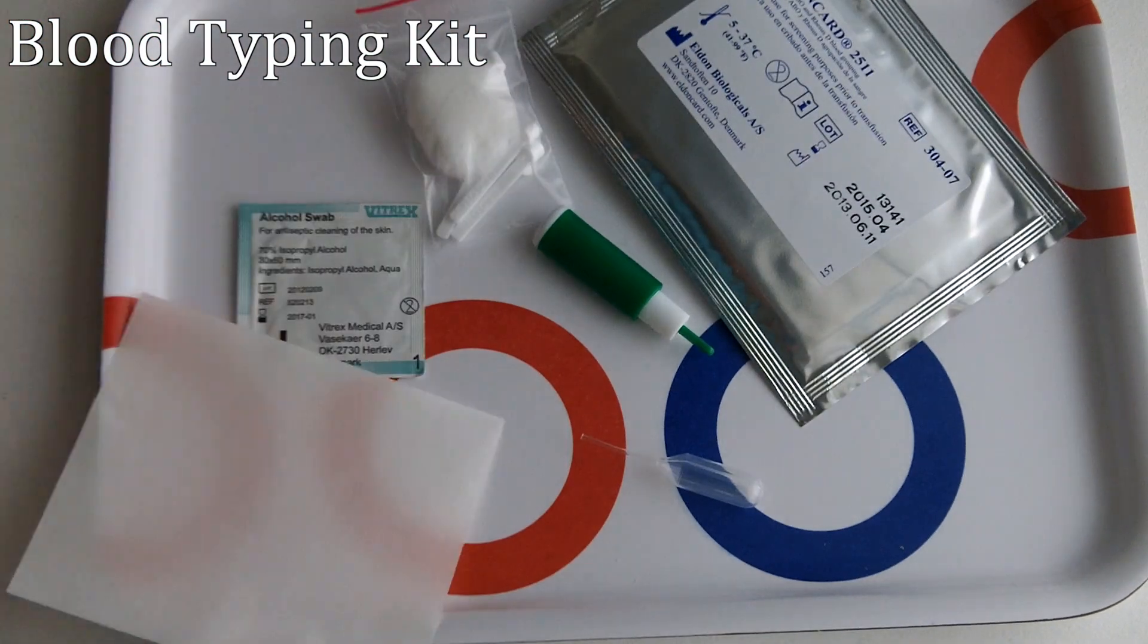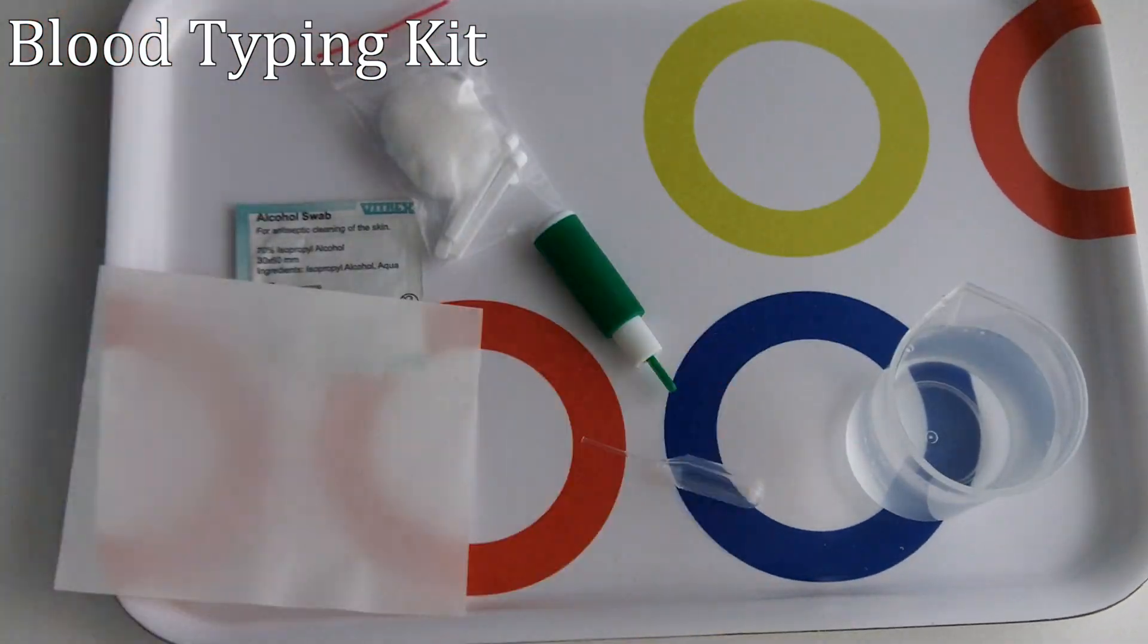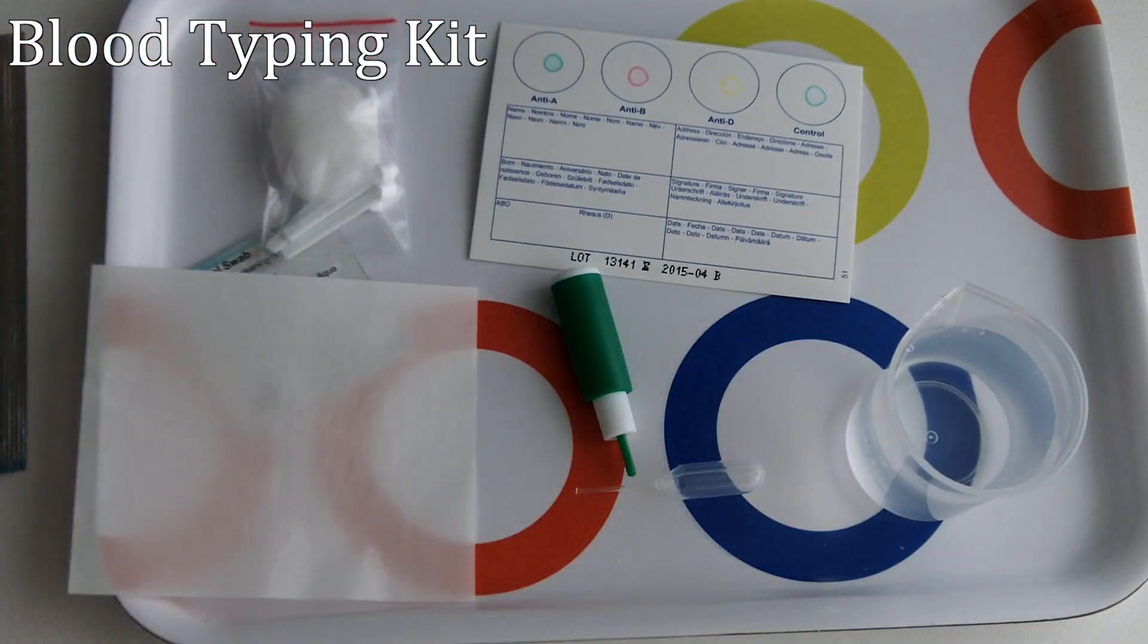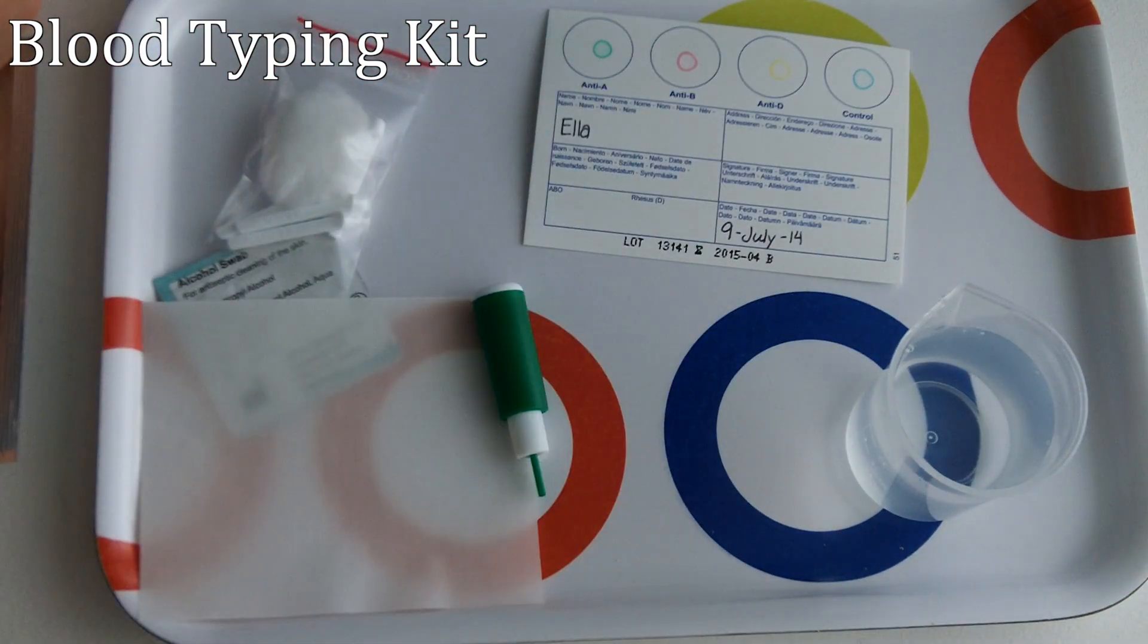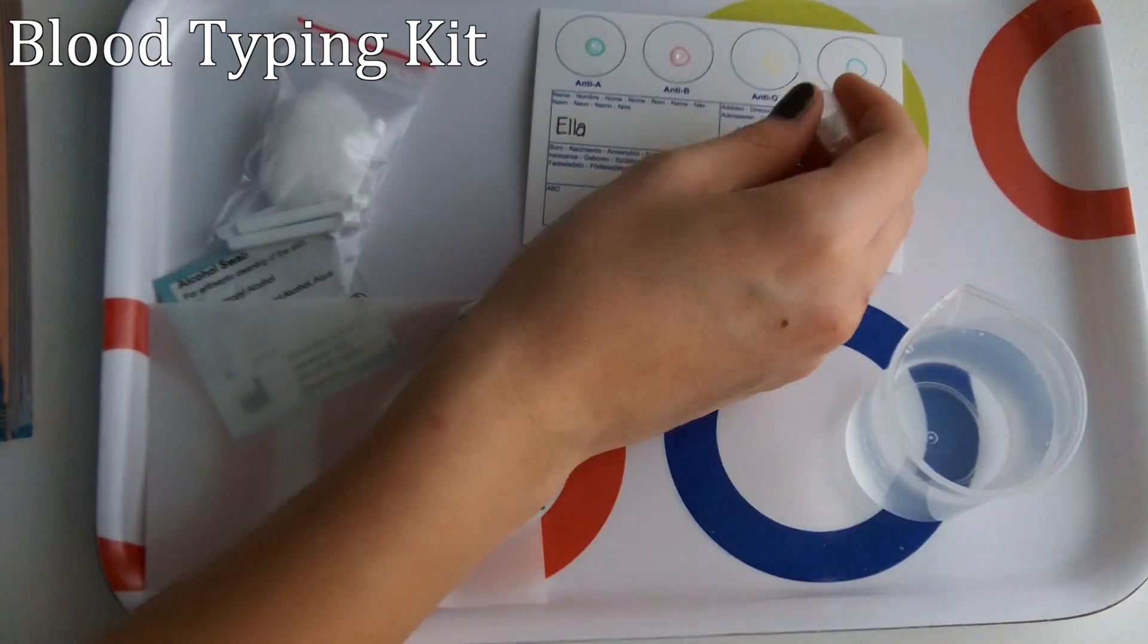First, I gathered the materials from the kit and the ones that the instructions told me to collect. Next, I pipetted a droplet of water into each of the colored circles on the card.